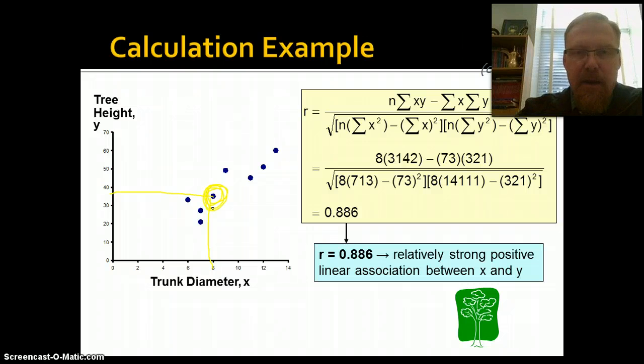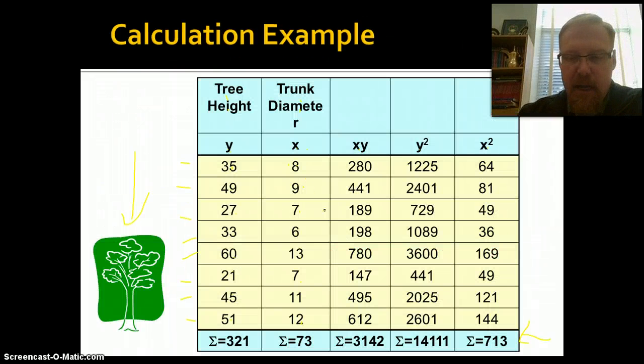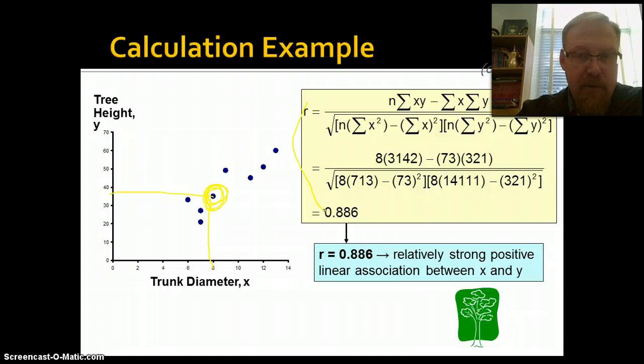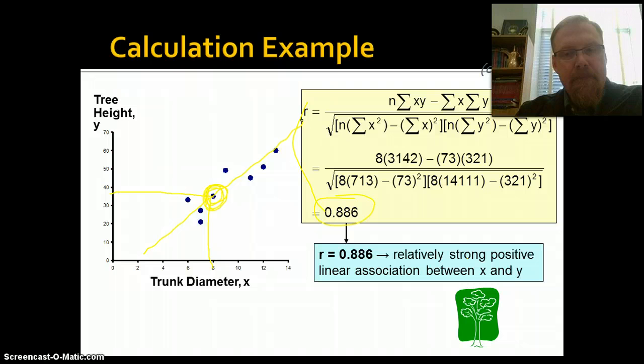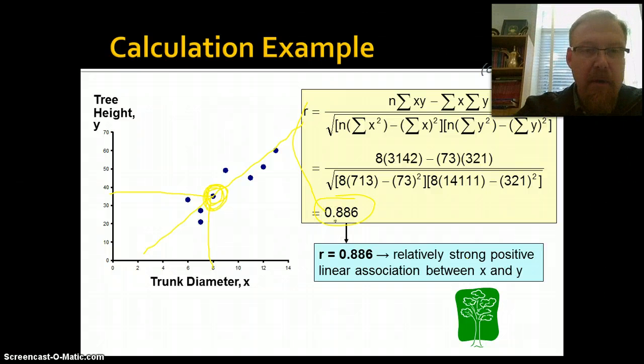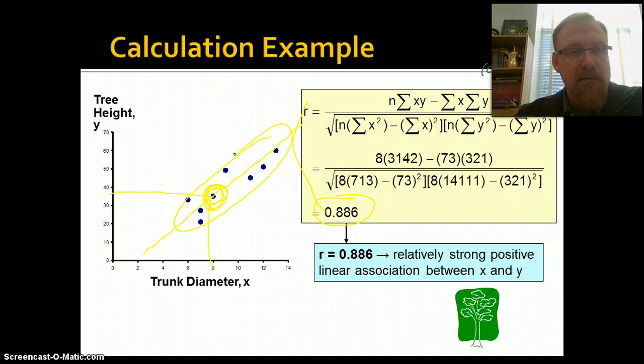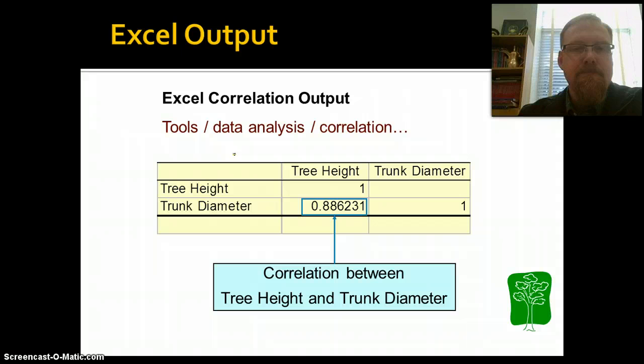If we calculate out the equation using the simple table that we set up here, we get this. And if you solve it, it's 0.886. This is a relatively strong positive linear association between X and Y. And if we plotted that, it would look like that. Right? That's all it is. It's a measure of the relationship, its strength, its direction, and eventually we'll get to its statistical significance. So we know that this is positive. We know that it is relatively strong because it's very close to 1. And when we look at it, it looks like a tight linear distribution.